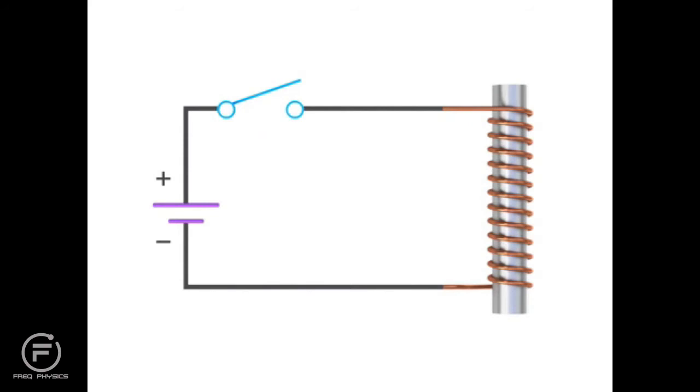To demonstrate the properties of an inductor, we'll add a resistance or light bulb to this circuit. As the switch is closed and the current flows through the circuit,